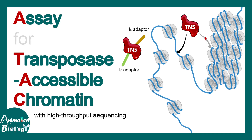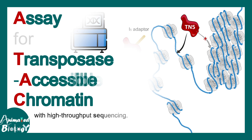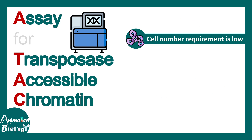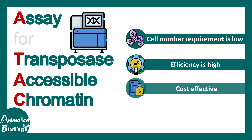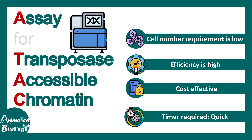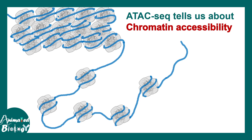ATAC sequencing is one type of high-throughput sequencing technology used to determine chromatin accessibility. ATAC stands for Assay for Transposase Accessible Chromatin followed by sequencing. ATAC-seq is really useful because the number of cells required to perform it is very low — it is highly efficient, cost-effective, and the time requirement is really low, so it's quite a quick process.